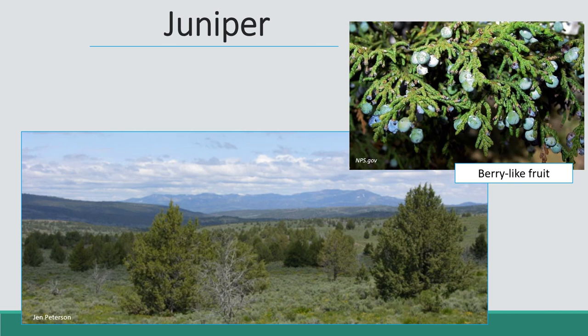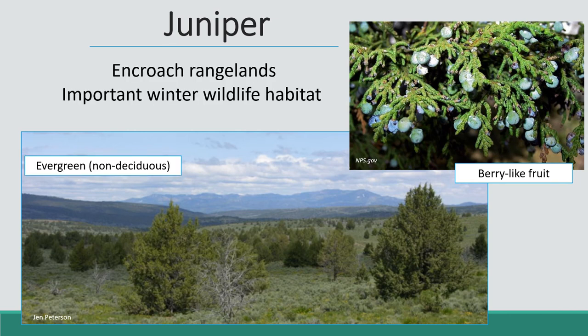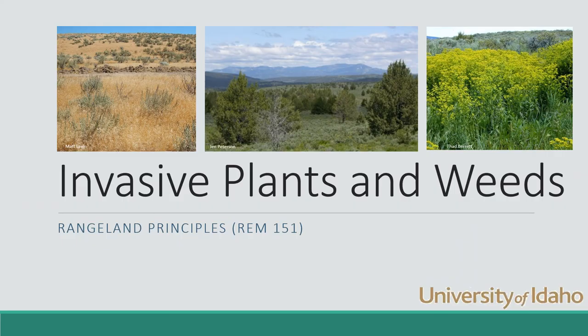On the left you can see young junipers just marching out onto the sagebrush steppe, which is problematic because it really changes wildlife habitat. It's evergreen, not deciduous, which means there is some forage value in the winter with those berries and green leaves. But it encroaches out into the rangelands and while it does make important habitat for some wildlife, it also changes the habitat and makes it worse for other animals like sage grouse. Those are just a few plants to bring home some of the points about why invasive plants and weeds are detrimental to rangelands.